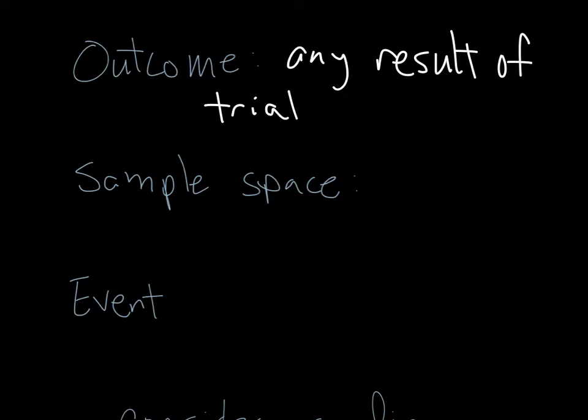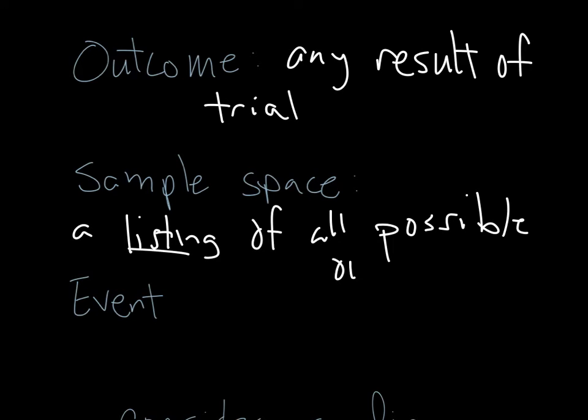All of those different results of that thing that we're doing is considered an outcome. The sample space is a listing of all possible outcomes. So let me say that again, it's a listing. The important word here is listing. This sample space shows us every possible thing that could happen from this thing that we are doing.